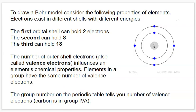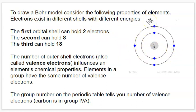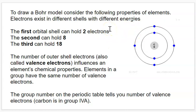So to draw a Bohr model we need to consider the following properties of elements. Electrons exist in different shells — here we have carbon with its two shells and its six electrons. The next thing we need to consider is how many electrons can fit in each shell. None of the shells are equally equal in their properties, so we need to learn how many each can store.